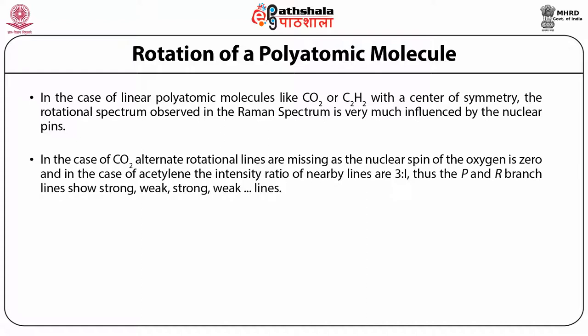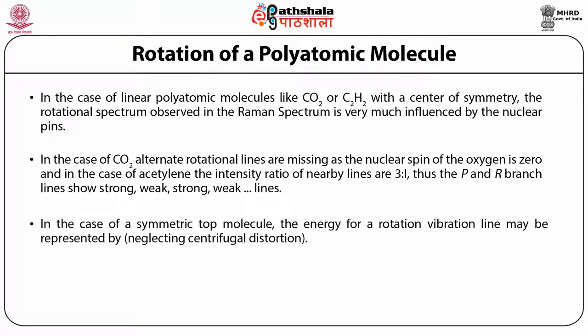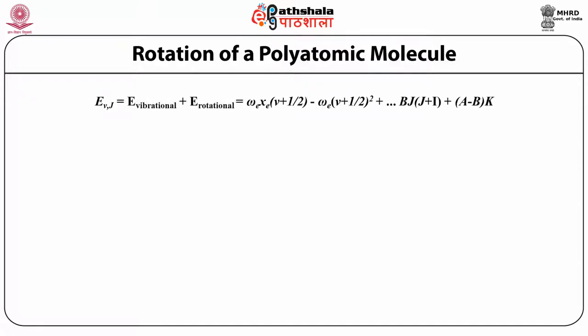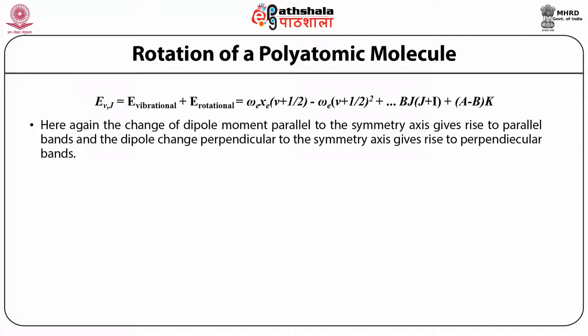In the case of CO2, alternate rotational lines are missing as the nuclear spin of oxygen is zero. In the case of acetylene, the intensity ratio of nearby lines is 3:1. Thus, the P and R branches show strong, weak, strong, weak lines. In the case of a symmetric top molecule, the energy for a rotation-vibration line may be represented, neglecting centrifugal distortion, as E(nu, J) = E_vibrational + E_rotational = omega_e*X_e*(nu + 1/2) minus omega_e*(nu + 1/2)^2 + ... + B*J(J+1) minus (A minus B)*K^2. The change of dipole moment parallel to symmetry axis gives rise to parallel bands and the dipole change perpendicular to symmetry axis gives rise to perpendicular bands.